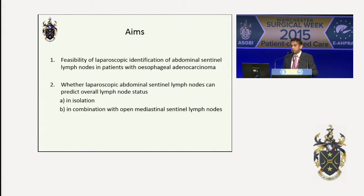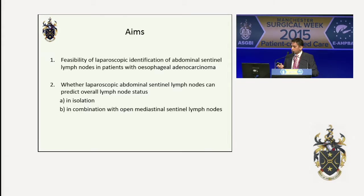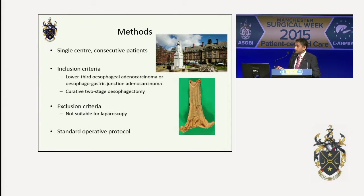We tested the feasibility of identifying abdominal central nodes laparoscopically in patients with esophageal adenocarcinoma, and wanted to show whether this, in isolation or in combination with identifying open mediastinal central nodes, could predict the overall lymph node status. This was a world-first study specifically looking at esophageal adenocarcinoma and a minimally invasive technique of identifying these central nodes.